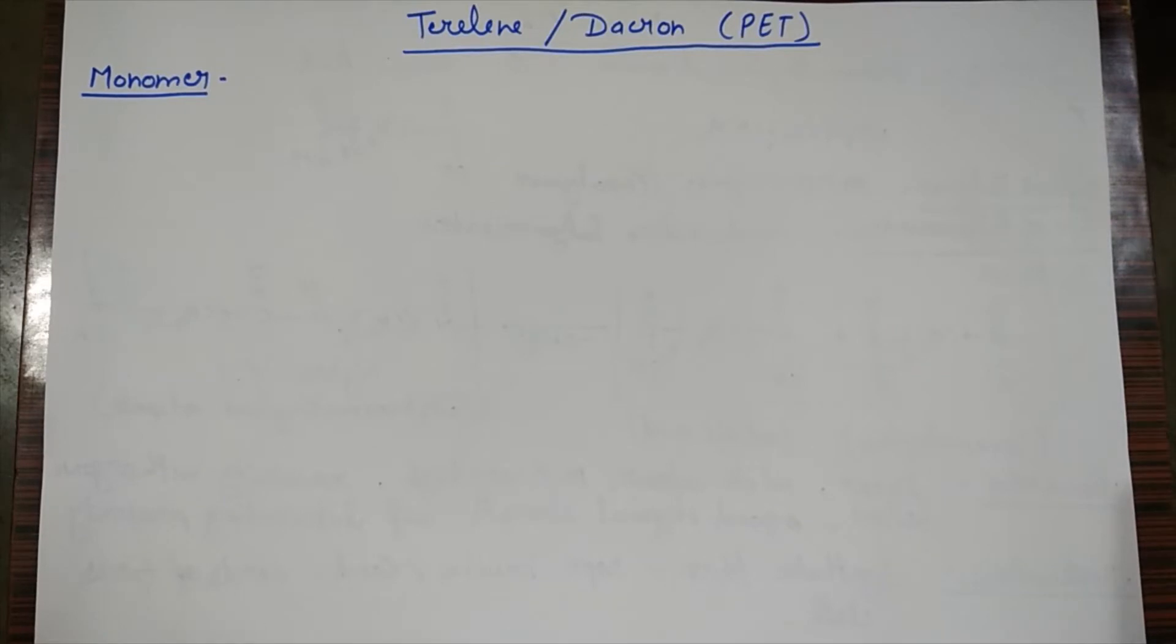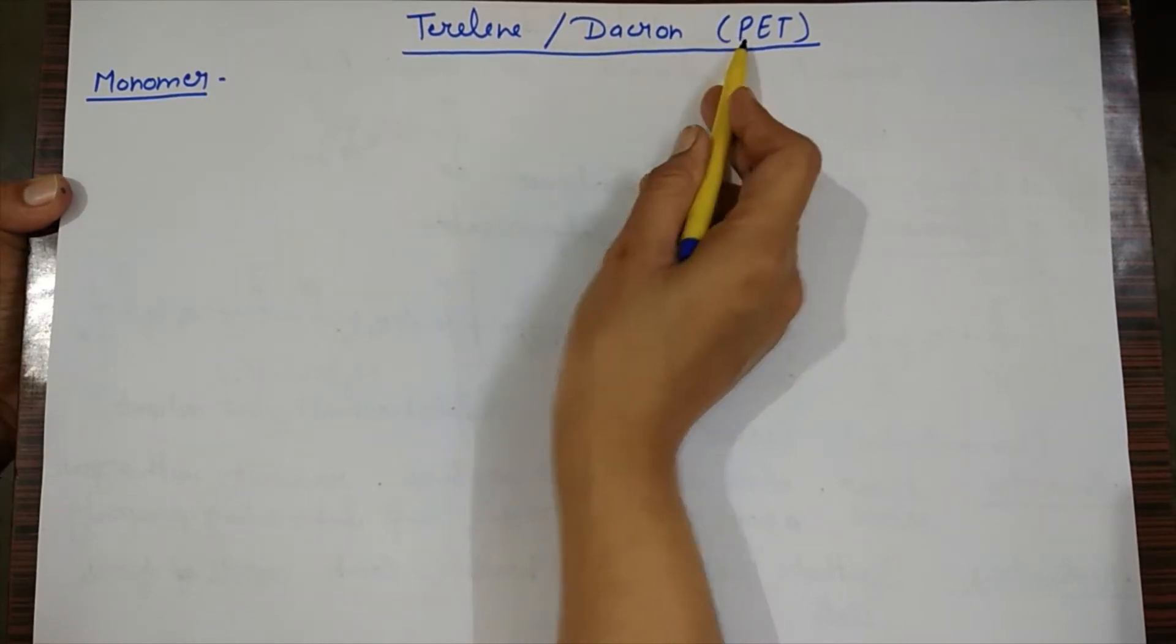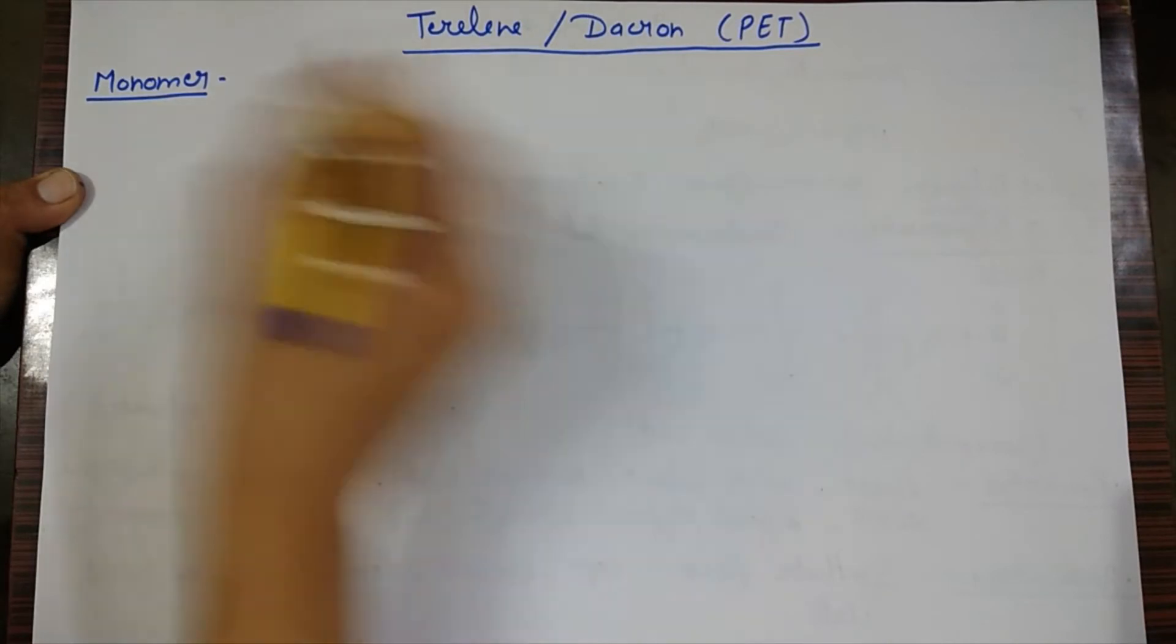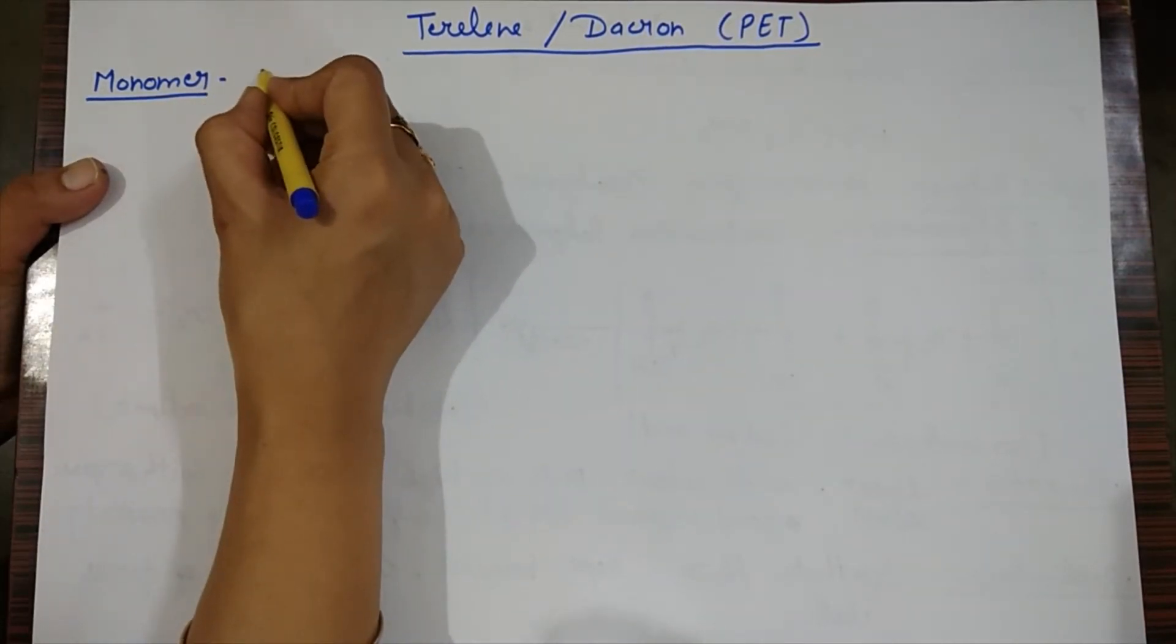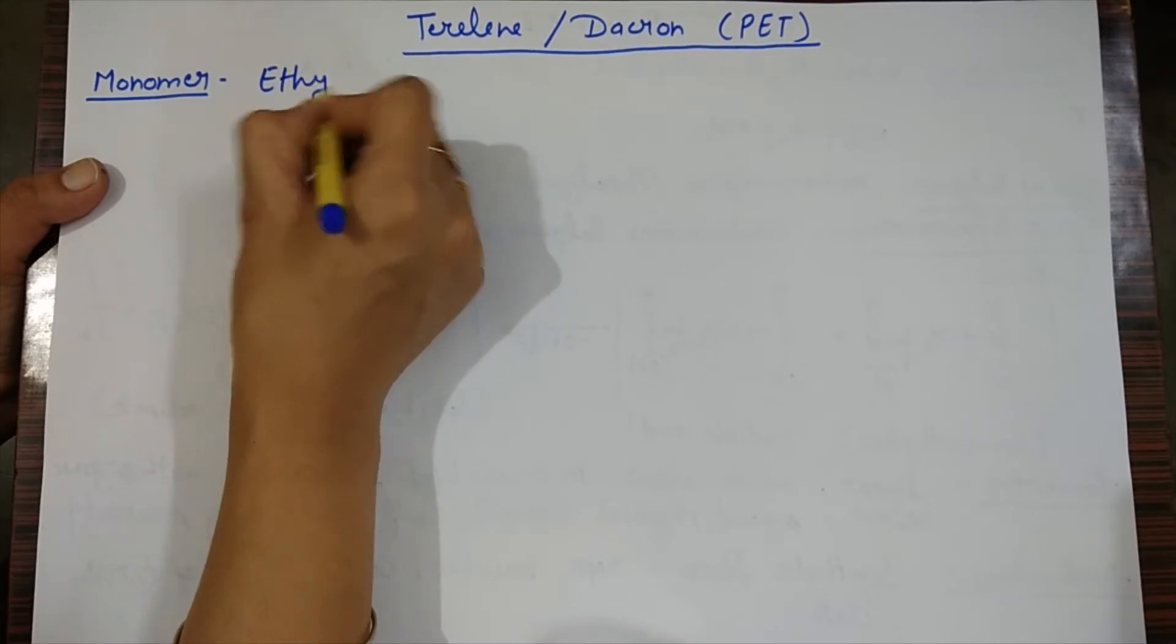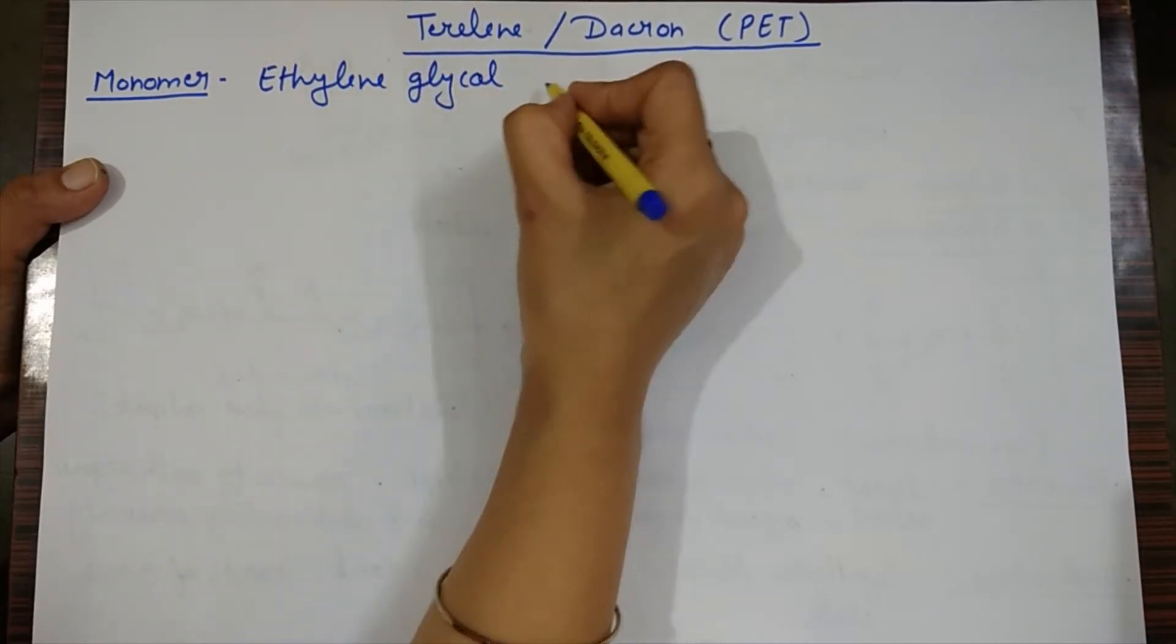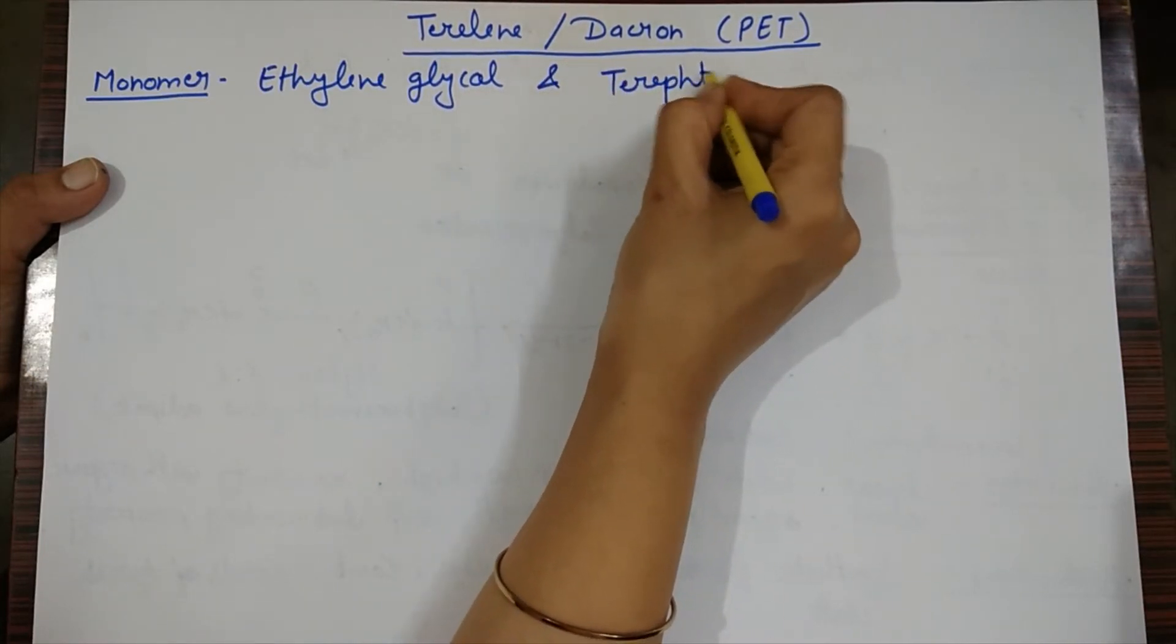So here is the polymer Terylene or Dacron. We can also describe it as PET. PET is the chemical name of the polymer, which is polyethylene terephthalate. First part: monomer units. There are two monomer units. First is ethylene glycol, and another is terephthalic acid.